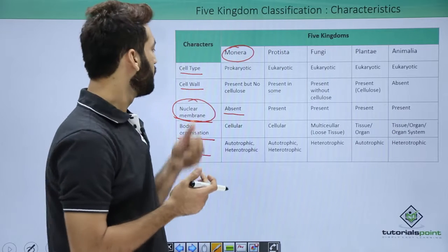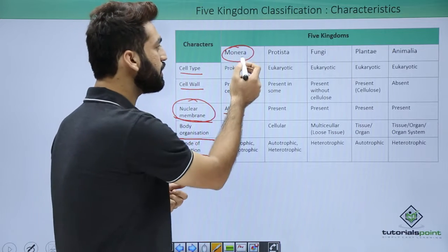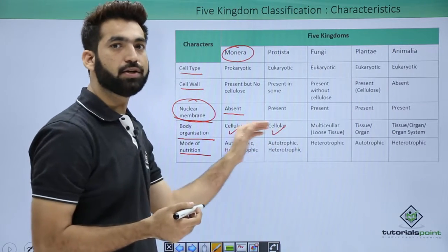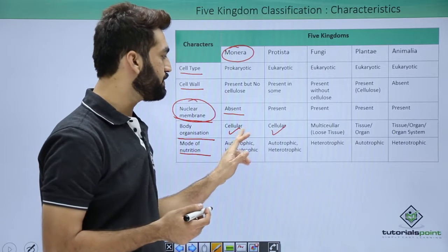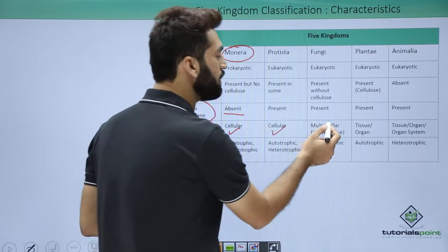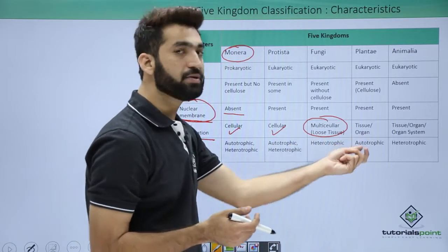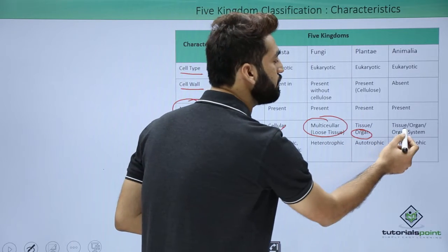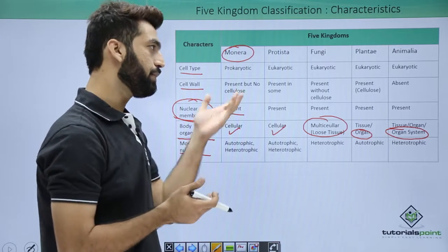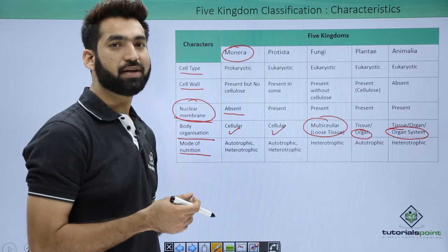Regarding body organization: Monera and Protista are cellular because both are unicellular — they have only one cell. Multicellularity starts from kingdom Fungi. Fungi have loose tissues; in Plantae, tissues are arranged into organs; and in Animalia, organ systems are present. This represents increasing evolutionary complexity across the kingdoms.